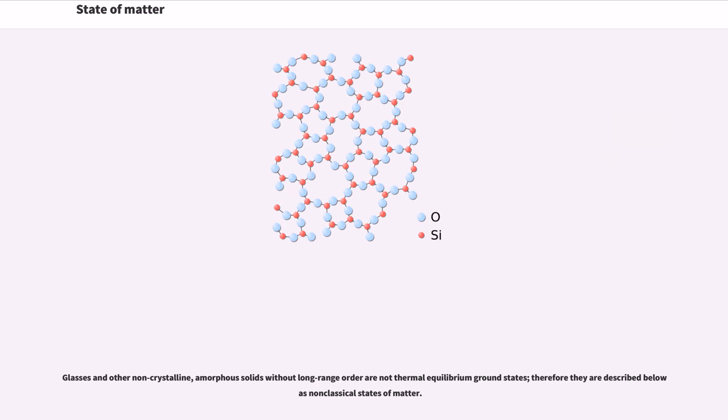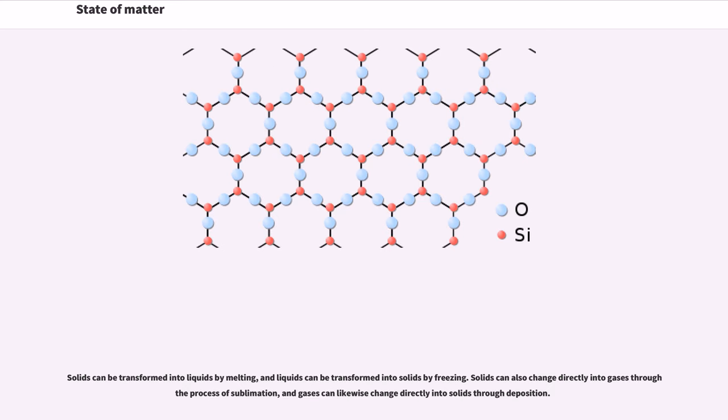Glasses and other non-crystalline, amorphous solids without long-range order are not thermal equilibrium ground states, therefore they are described below as non-classical states of matter. Solids can be transformed into liquids by melting, and liquids can be transformed into solids by freezing. Solids can also change directly into gases through the process of sublimation, and gases can likewise change directly into solids through deposition.